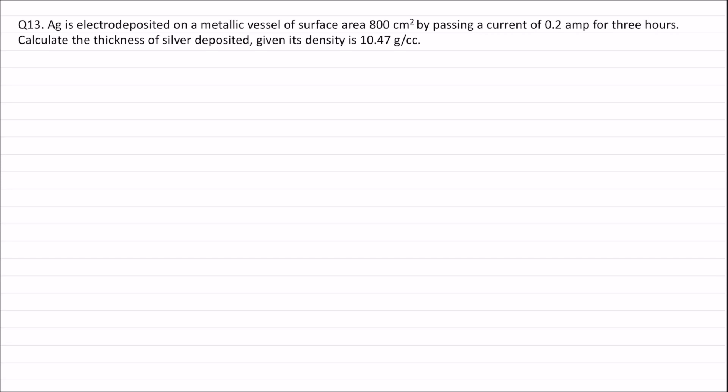Calculate the thickness of silver deposited, given its density is 10.47 g per cm³. Now, weight of silver deposited is equal to Z × I × T.